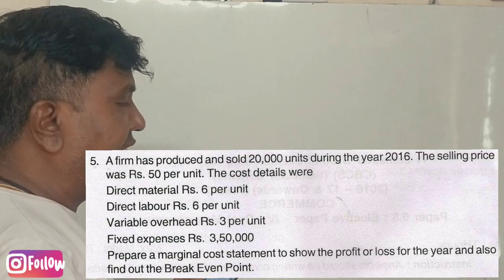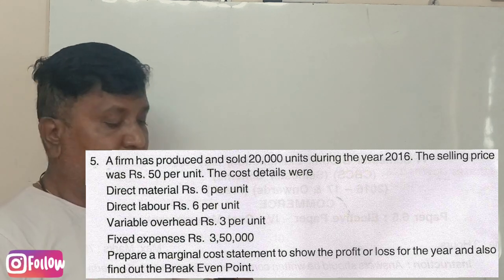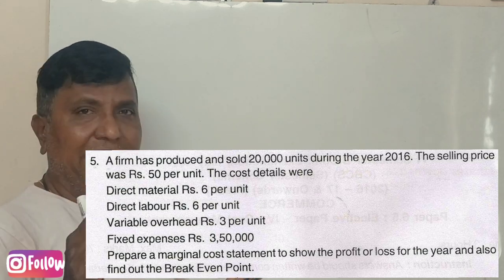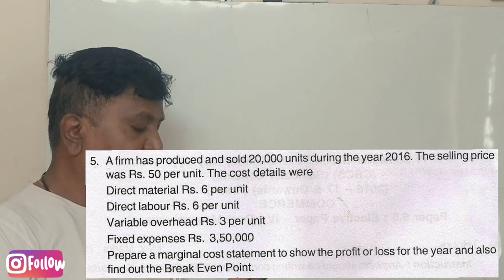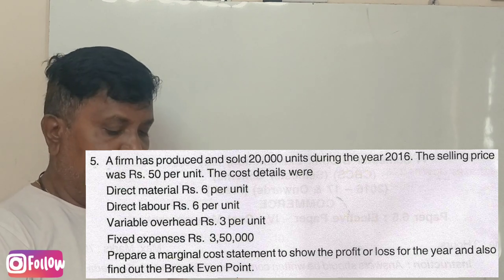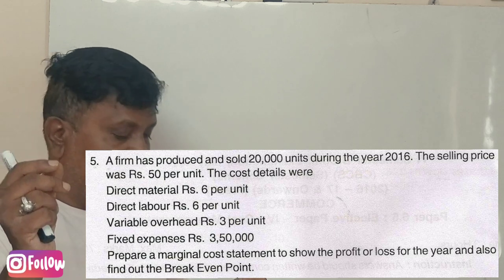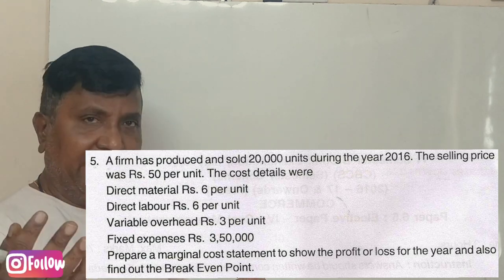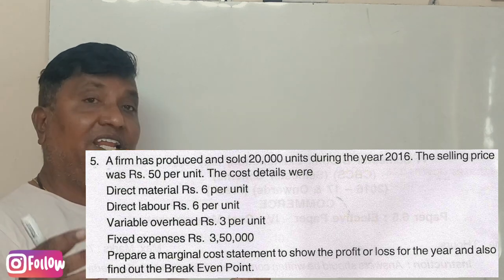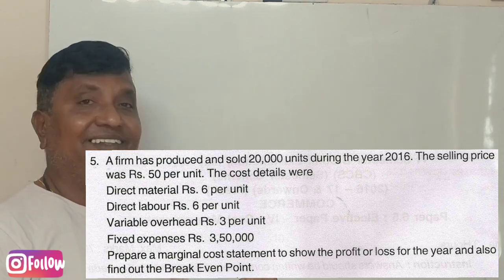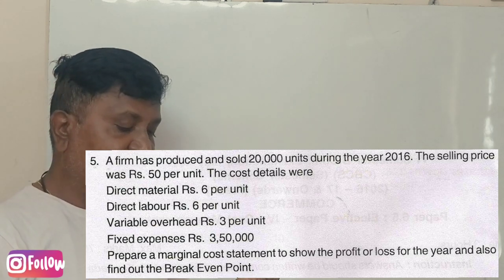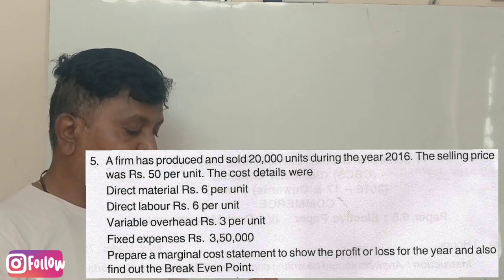Marginal costing — this is a 2017 exam question paper question. The farm has produced and sold 20,000 units during the year 2016. The selling price per unit was ₹50. The cost details were: direct material ₹6 per unit, direct labor ₹6 per unit, variable overheads ₹3 per unit, and fixed expenses ₹3,50,000. Prepare a marginal cost statement to show the profit or loss for the year, and also find the break-even point.